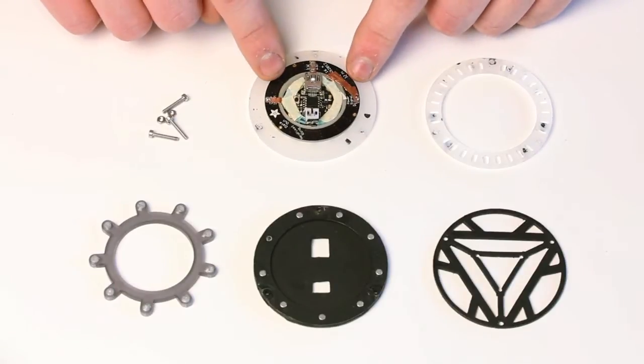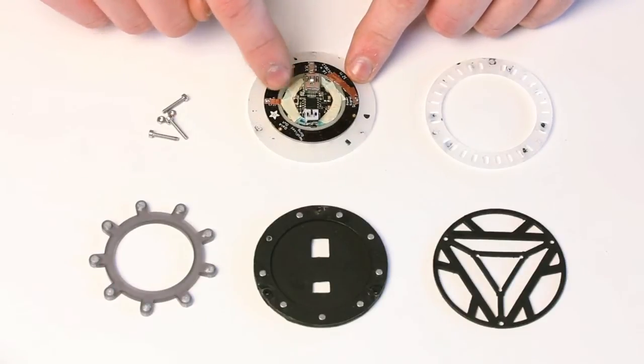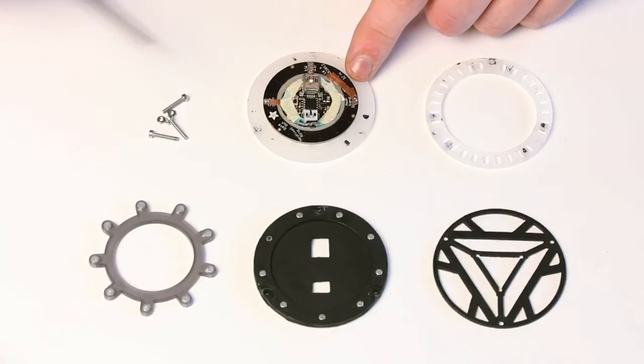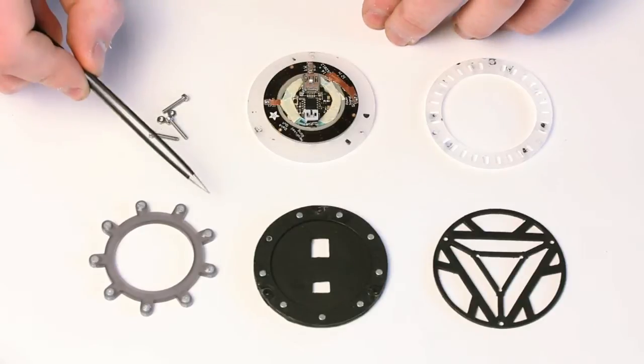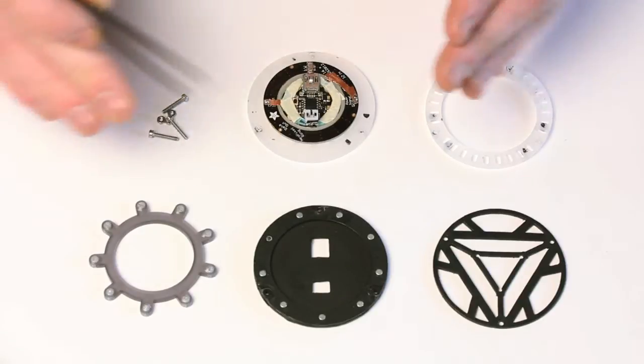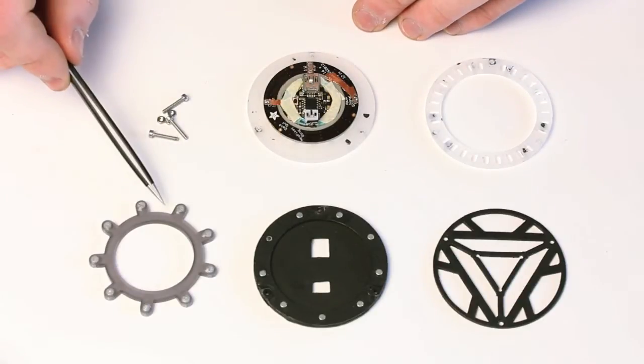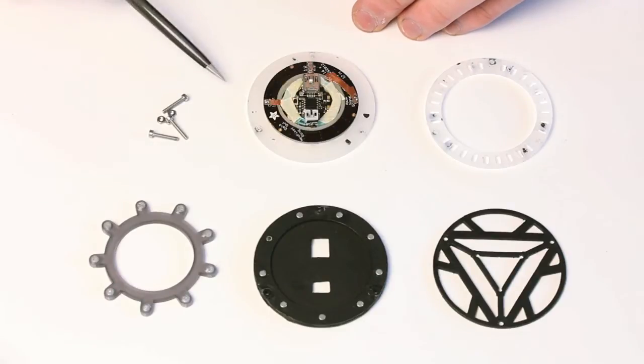This layer also holds the neopixel ring in place and the Gemma in place and if you can see there I've got two spacers which keep pressure on the Gemma. I've then got this base layer which keeps everything together and also connects to this magnet ring. The whole build is then just held together by these three nuts and bolts.